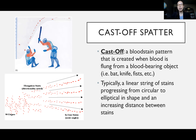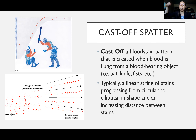Moving on, we have cast off spatter — a bloodstain pattern created when blood is flung from a blood-bearing object. If someone is attacking another person with a bat, and their bat gets blood on it, then they swing it up and blood flings onto the ceiling or wall, that's cast off spatter. It's typically seen as a linear string of stains that progress from circular to more elliptical in shape, with increasing distance between the stains further along the cast off trail.